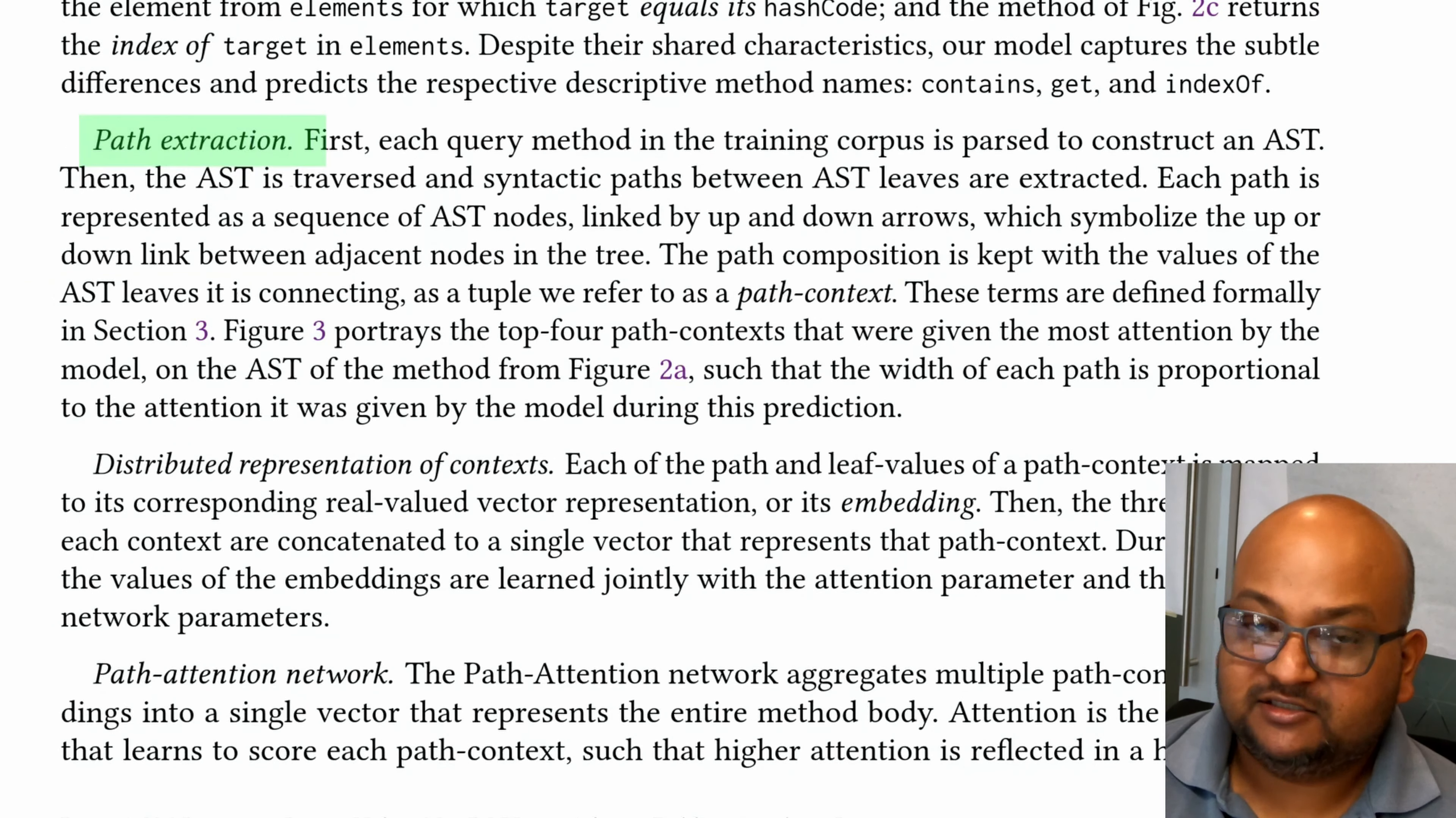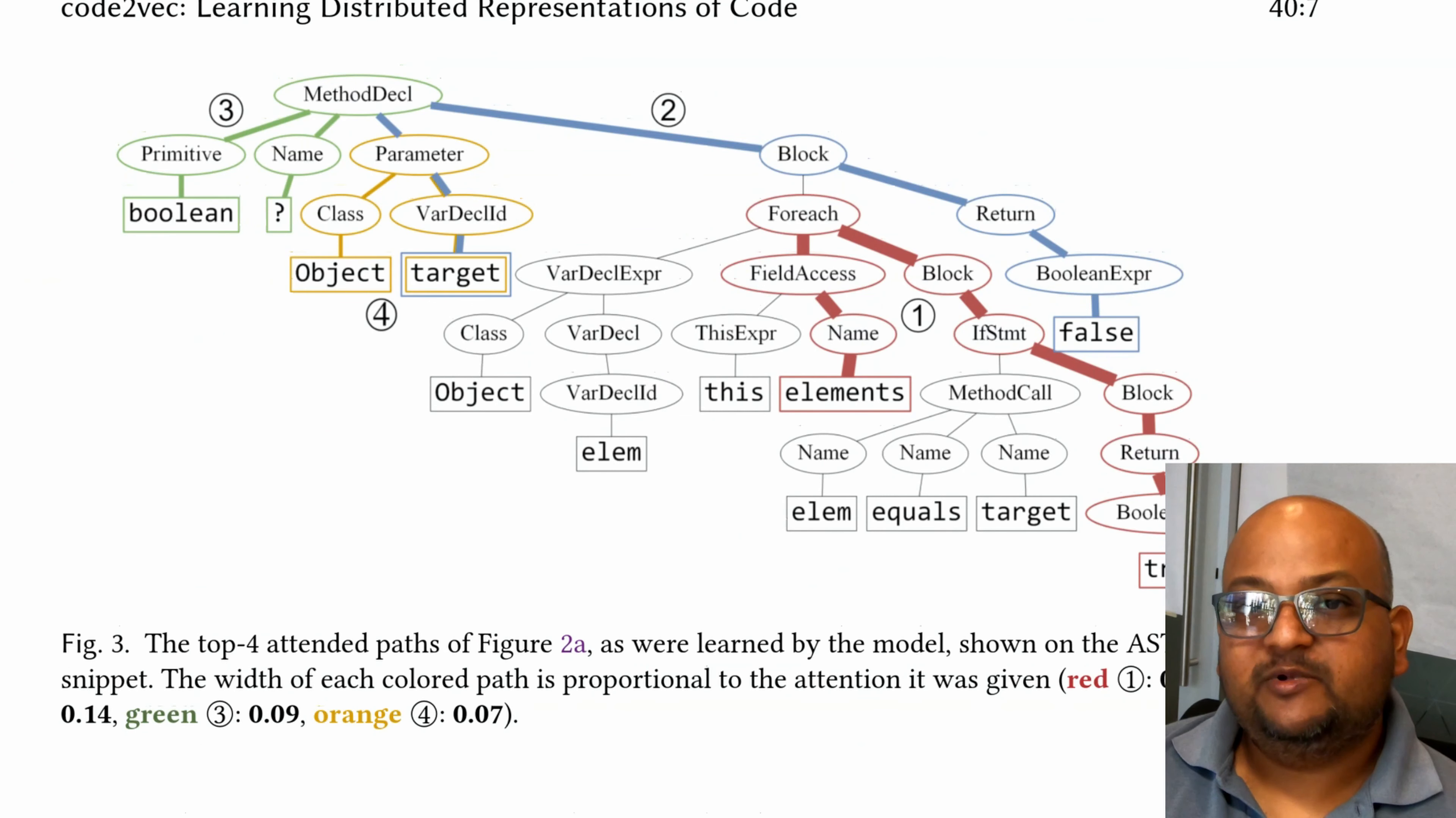Step one is path extraction. We build the AST for the code snippet, and then we extract paths that go through that AST. When we extract these paths, we also want to assign an importance or an attention value to each path.